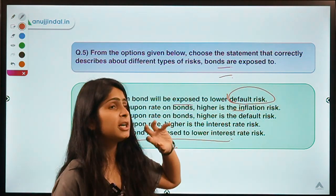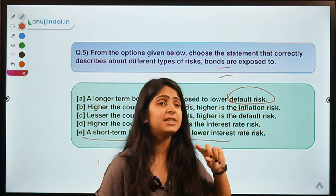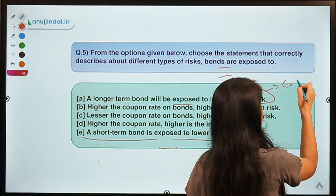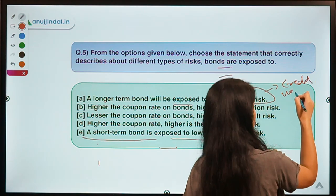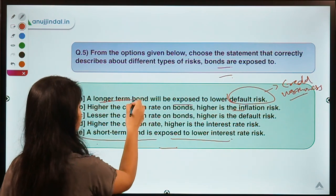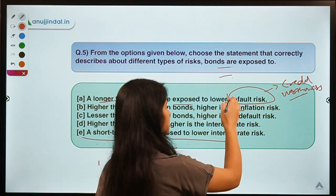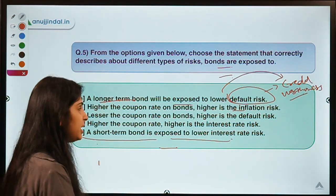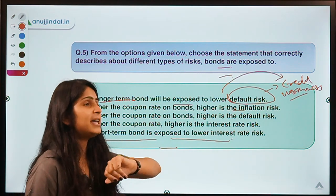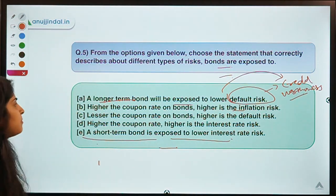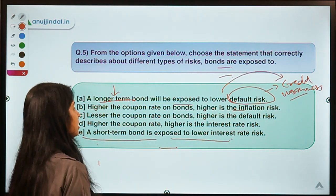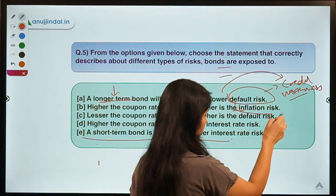Let's see why option E is correct and others are not. Talking about default risk first — default risk means that you have bought bonds from an entity and that entity is not going to pay you back. Default risk basically depends upon the credit worthiness of the bond issuer. There is no role for the term of the bond — default risk's major concern is with the credit worthiness of the issuer. If the issuer is creditworthy, default risk is less, and vice versa.